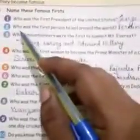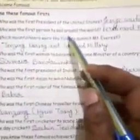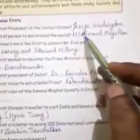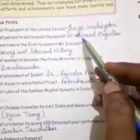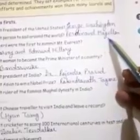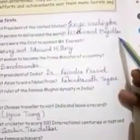Number 2. Who was the first person to sail around the world? Ferdinand Magellan. F-E-R-D-I-N-A-N-D M-A-G-E-L-L-A-N.